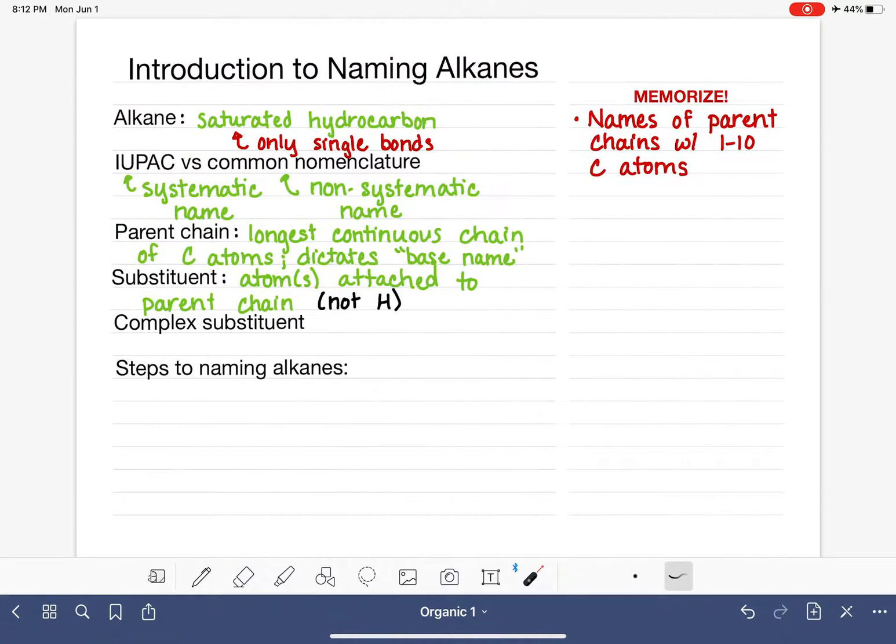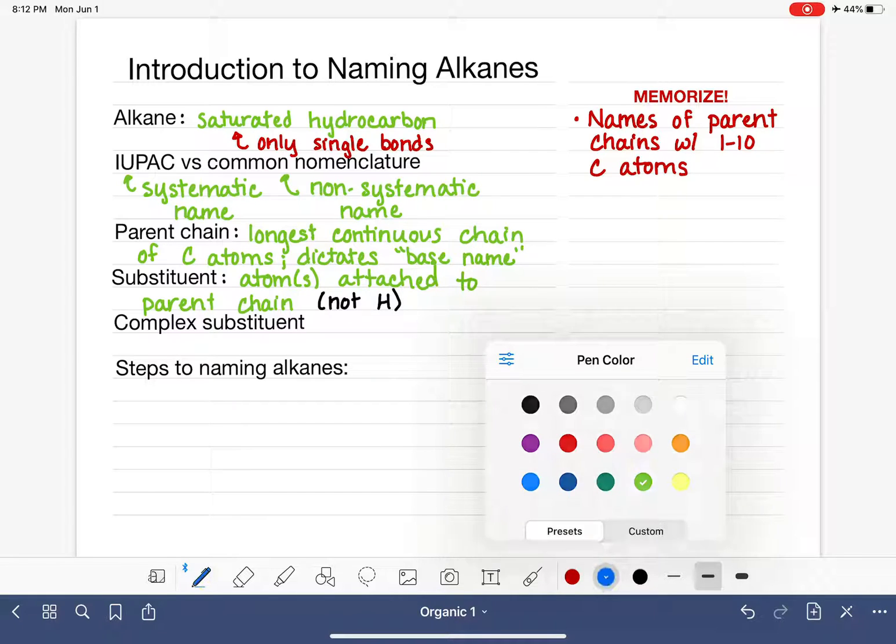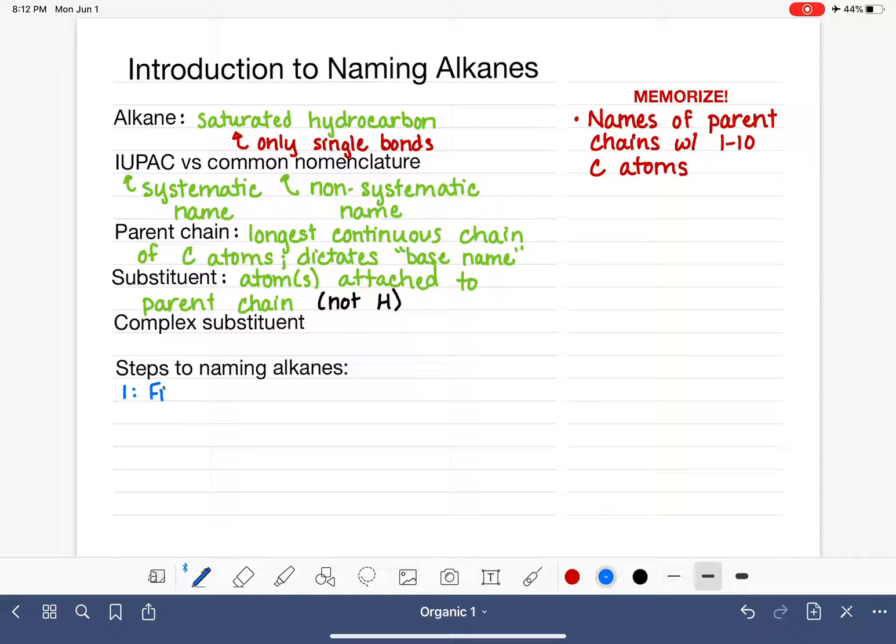So let's go back again before we tackle naming this type of molecule. First of all, let's start working on our steps for naming alkanes. First thing that we are going to do always will be to find the longest continuous chain of carbon atoms.